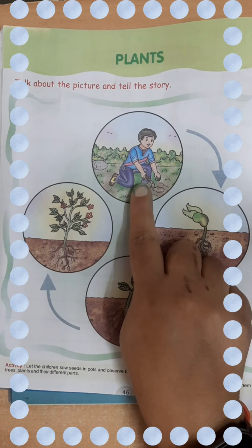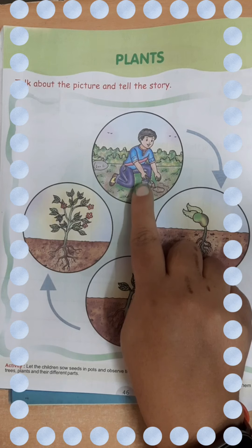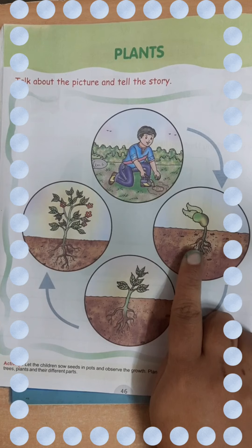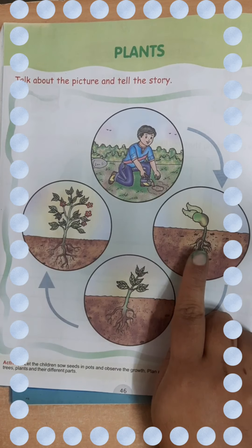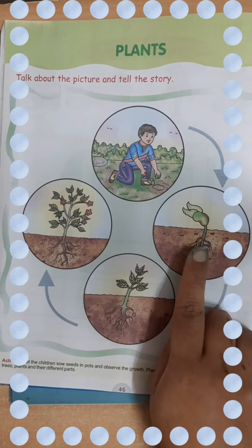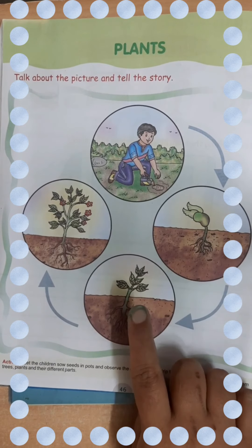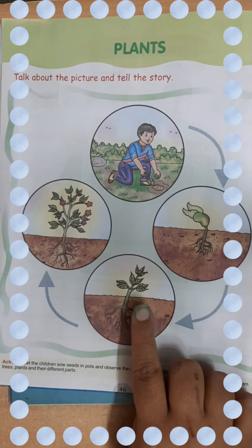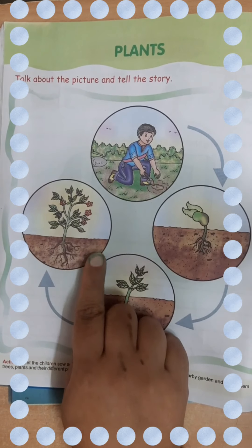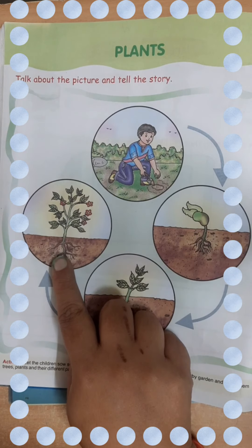The farmer sows the seeds — heigh-ho, cherry-ho, the farmer sows the seeds. The water begins to fall, the air starts to blow, the sun begins to shine, the plant begins to grow — heigh-ho, cherry-ho, the plant begins to grow.